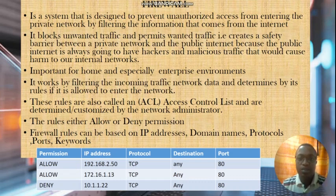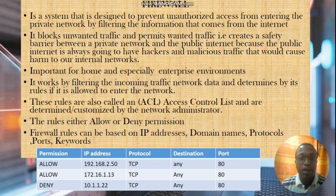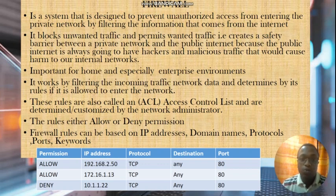There's what we call a firewall. A firewall is basically a system designed to prevent unauthorized access from entering a private network by filtering information that comes from the internet — it blocks unwanted traffic and permits wanted traffic. This creates a safety barrier between a private network and the public internet, because the public internet always has hackers and malicious traffic that could cause harm. It is important to use a firewall for home and especially enterprise environments.